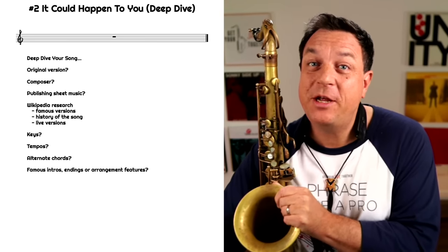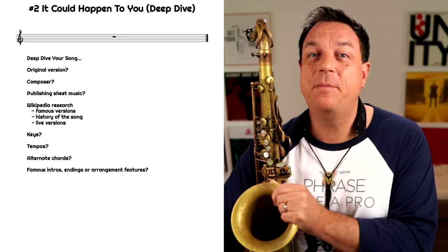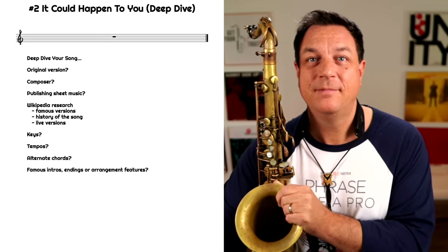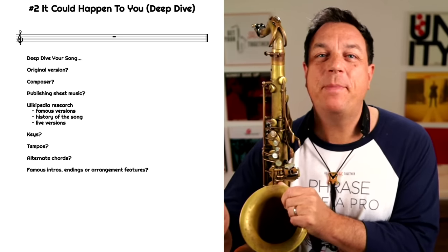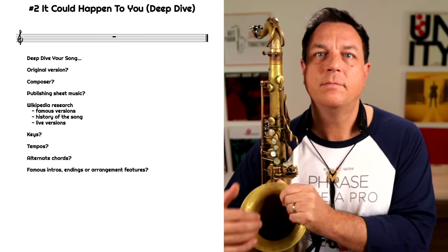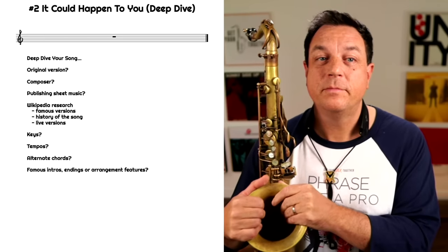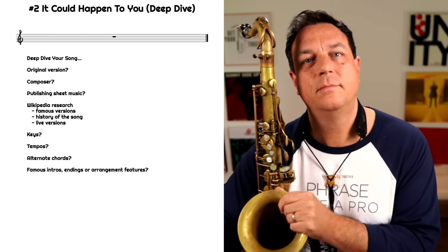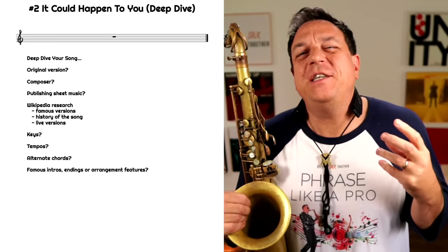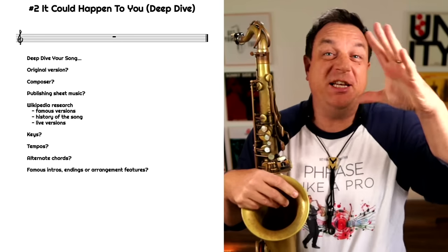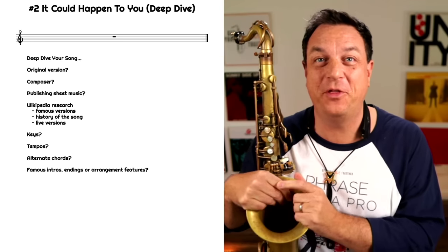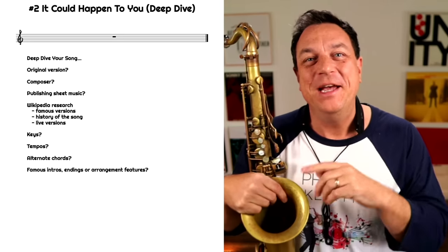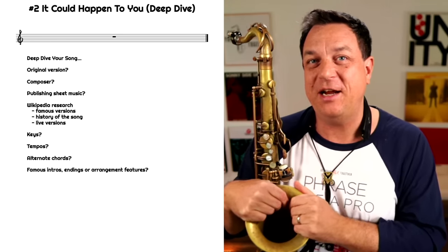Early important versions of 'It Could Happen To You' were by Jo Stafford — this was the first commercial recording. Then there was a famous version by Bing Crosby. Now quite often with these really old-fashioned versions they're kind of all chromatic and strings and lush arrangements, and it's actually quite difficult to hear what the chords are because of all the fancy arrangement and twirls that go on top. So it might be later, when you get into the jazz musicians, that you can actually hear the chords.